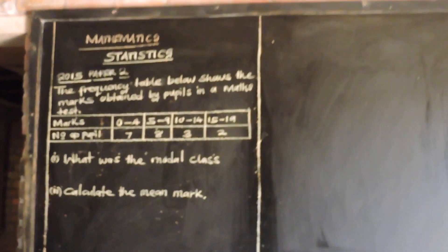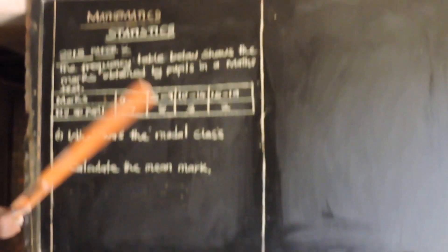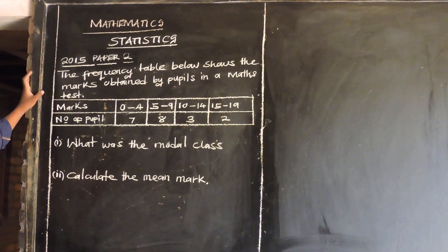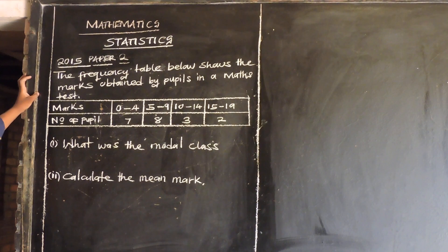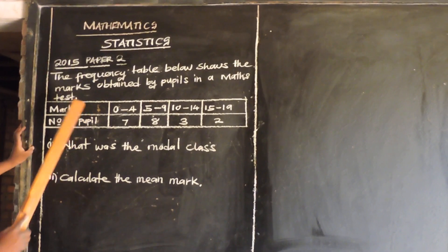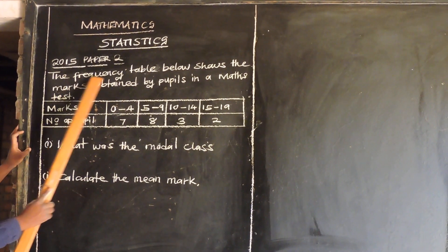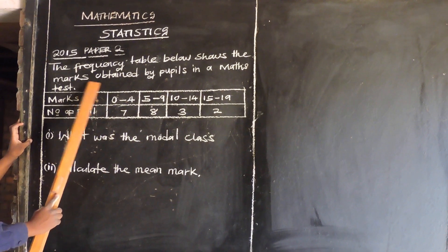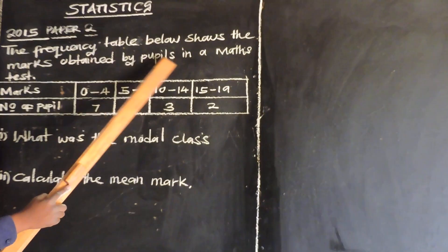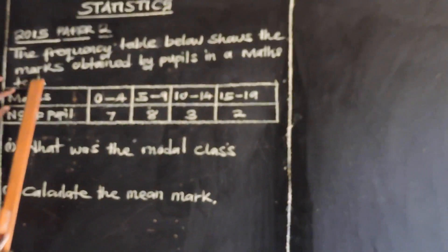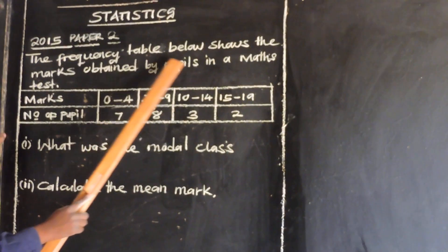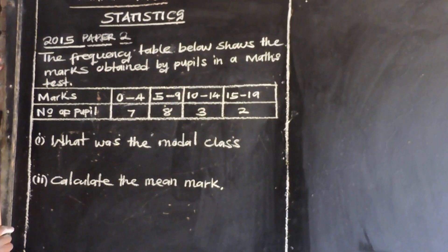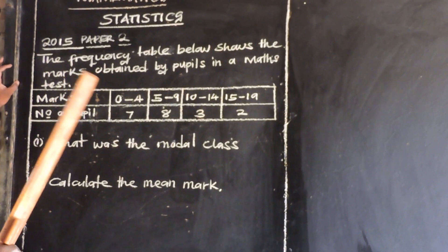Let us look at statistics. The first question I am going to look at is the 20th paper. That's our first example. The question says the frequency table below shows the marks obtained by pupils in mathematics tests.